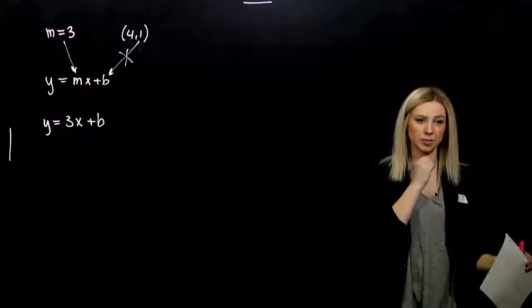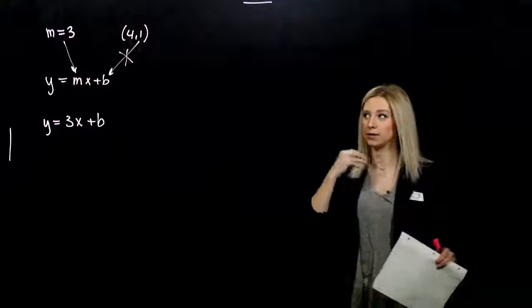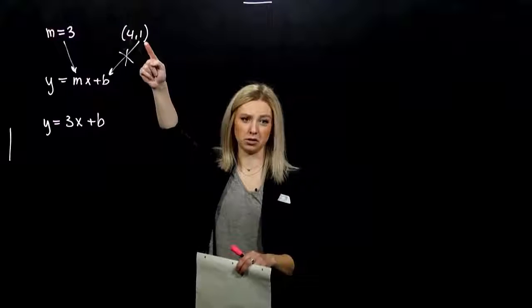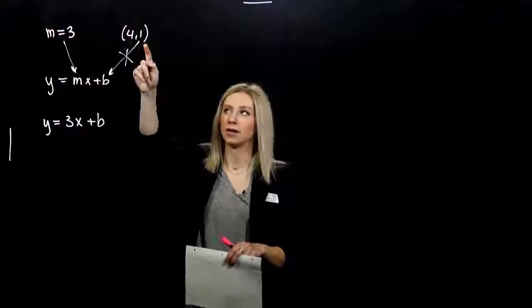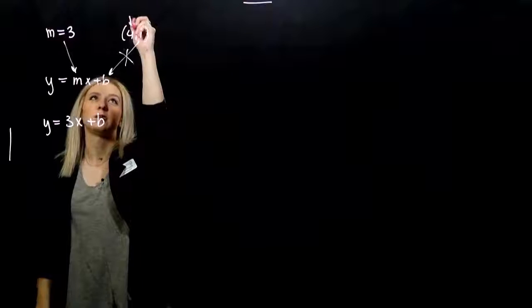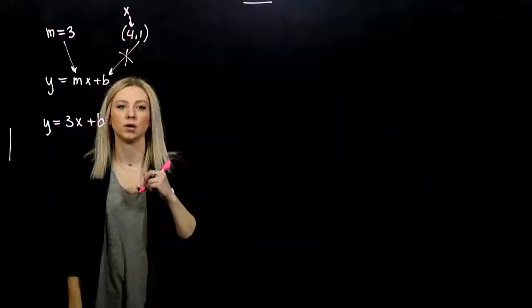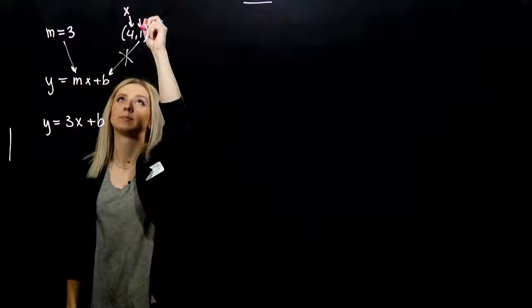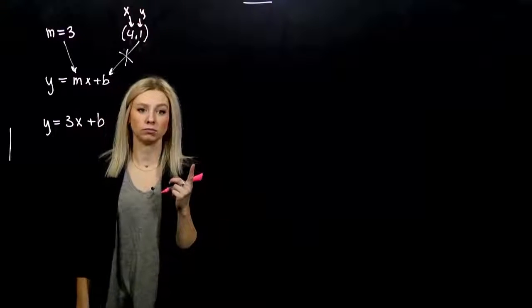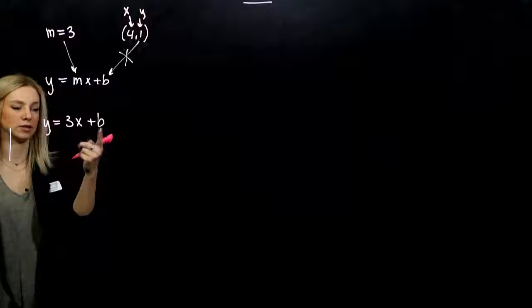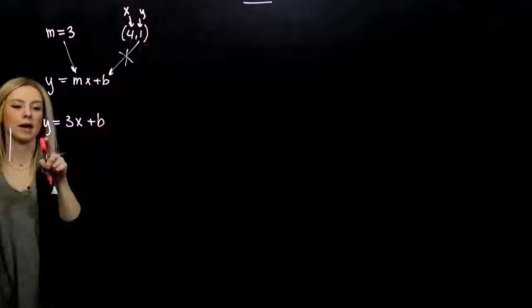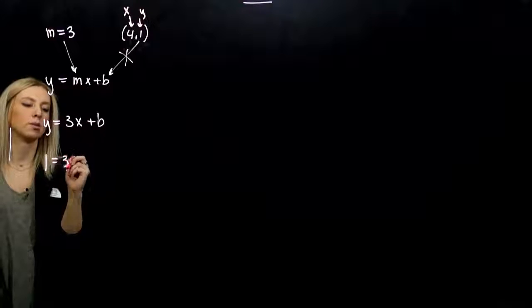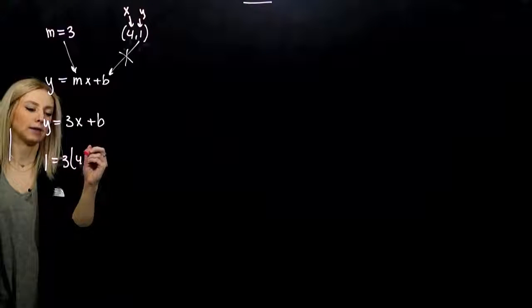The only other piece of information we were given is a random point the line is going through. I have an x value — when I plug in 4 for x, what do I get out for y? 1. So I can plug those in, fill in these two unknowns, and solve for the unknown b. I know that I get 1 out for y when I plug in 4 for x.